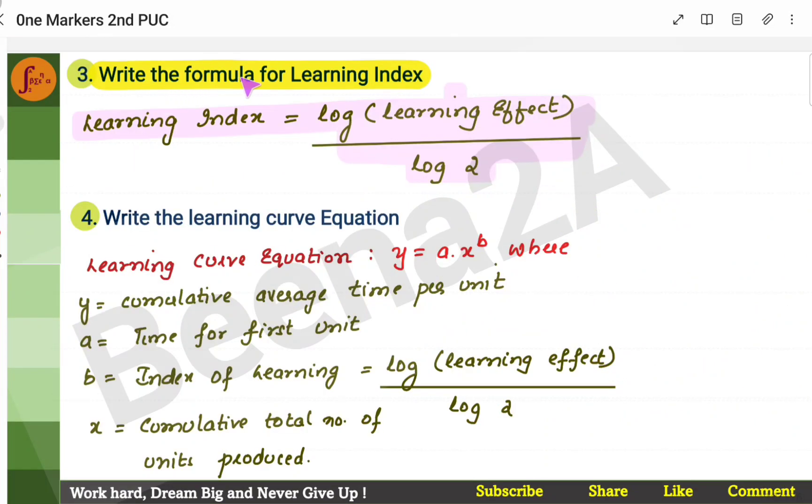Third thing is, you need to write the formula for learning index. What is learning index? Log of learning effect by log 2. Then, you need to remember the learning curve equation. This is the learning curve equation. Not only the equation, just write each of these parameters.